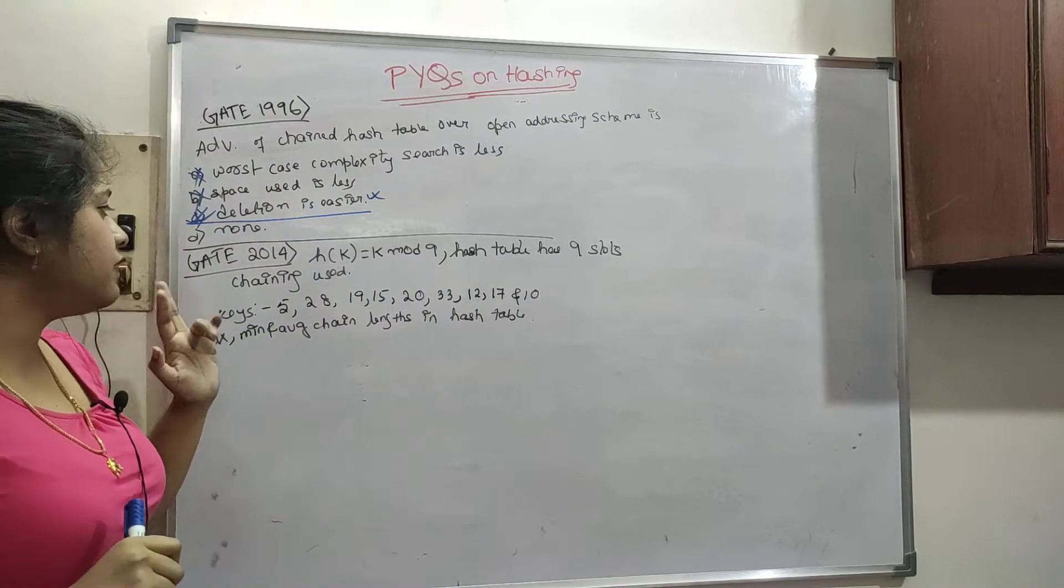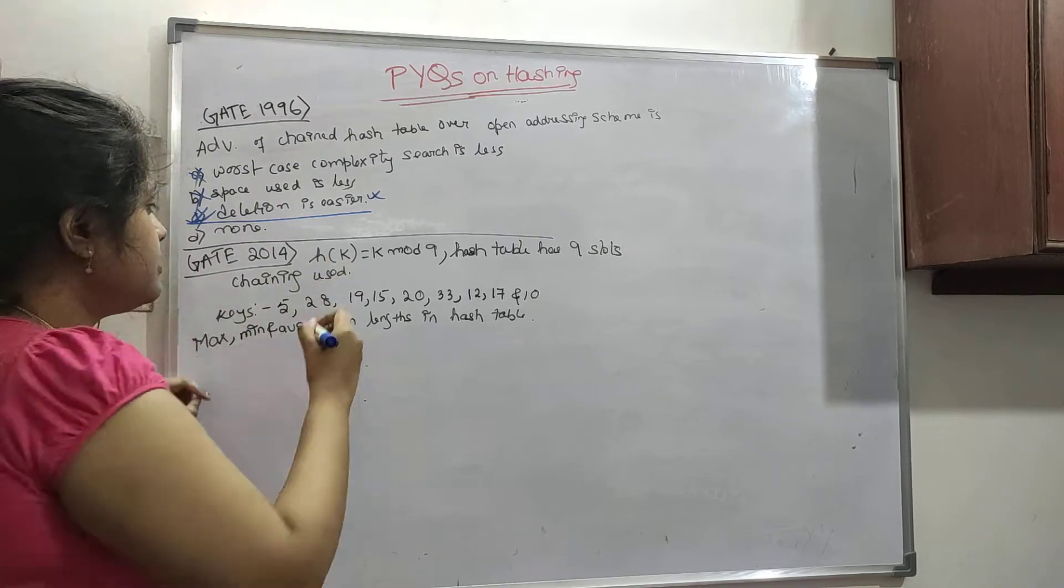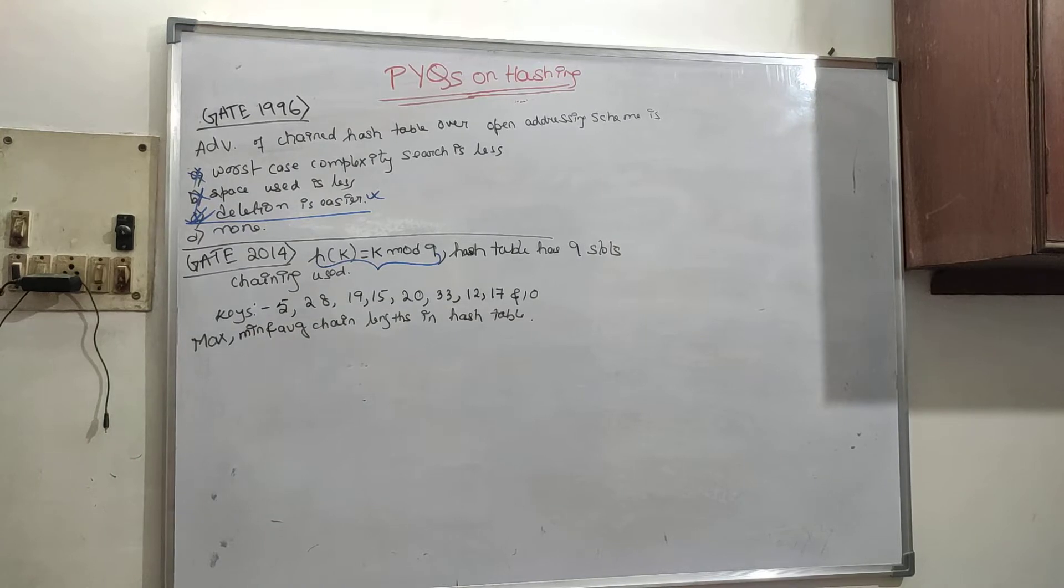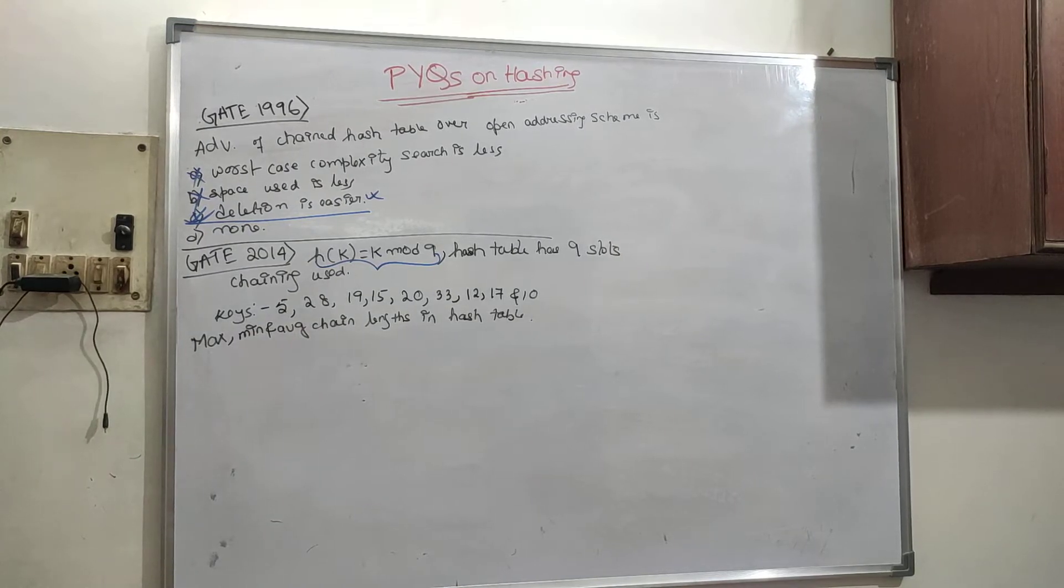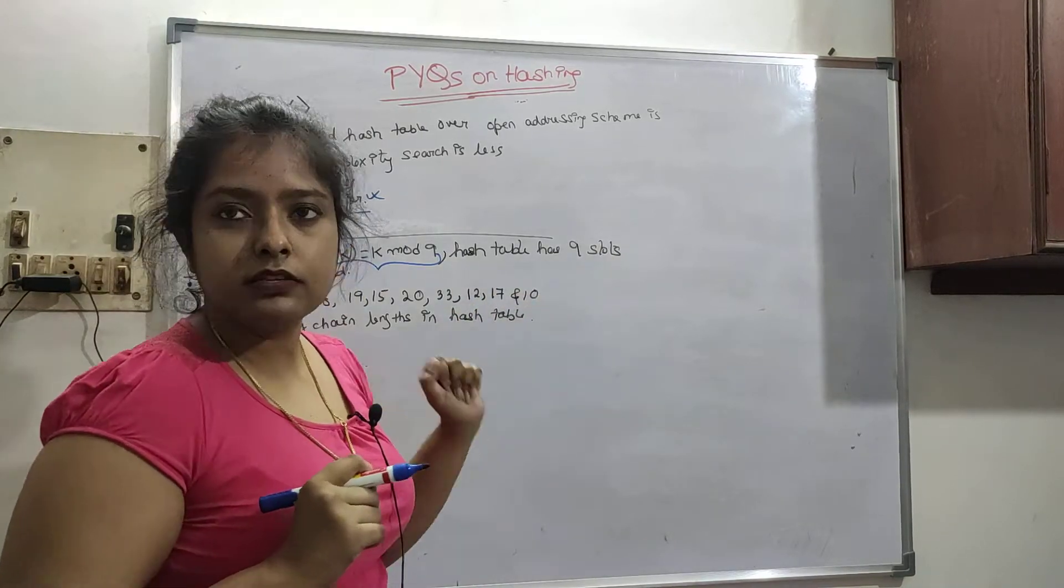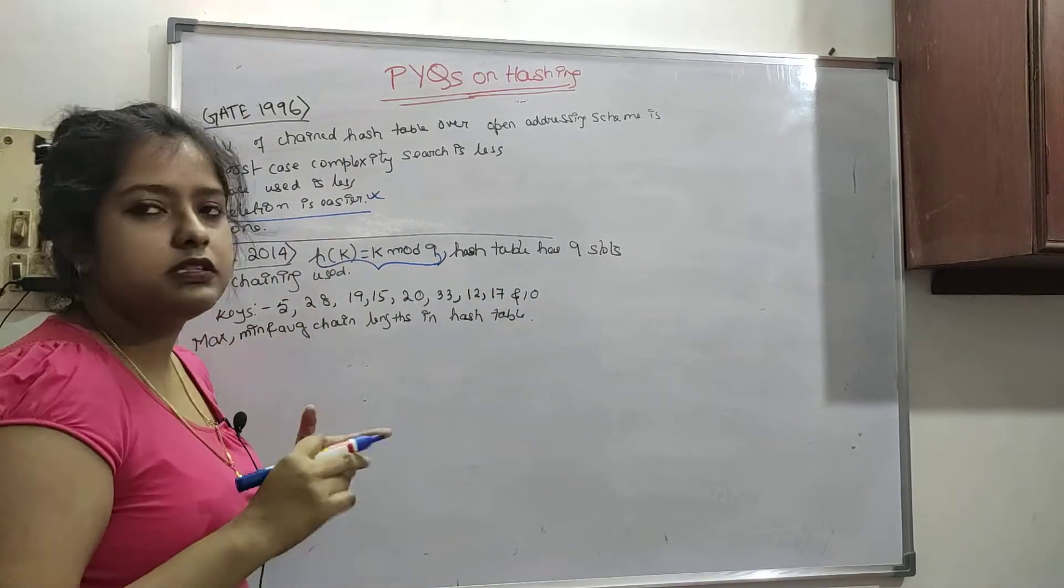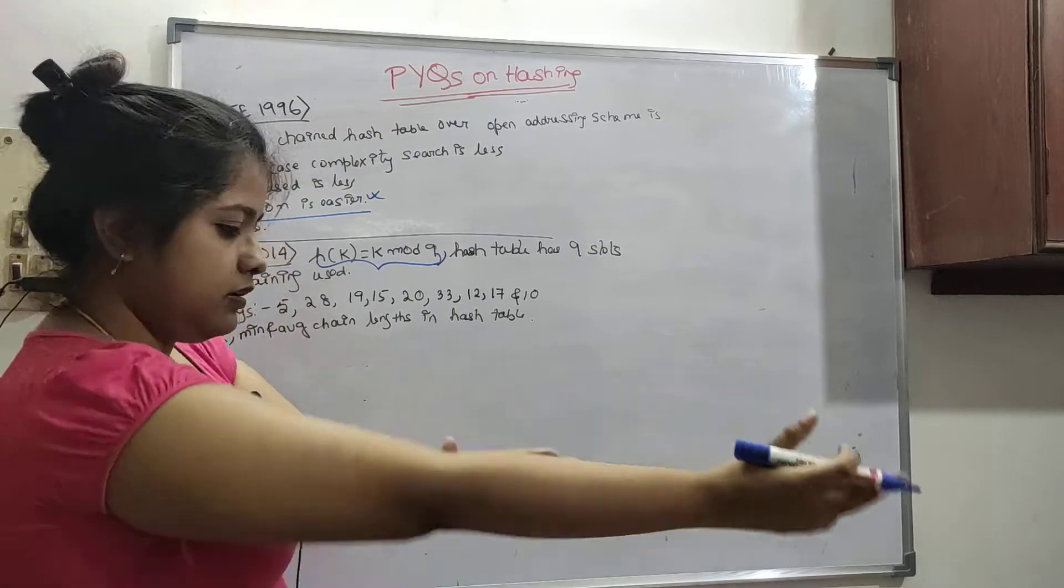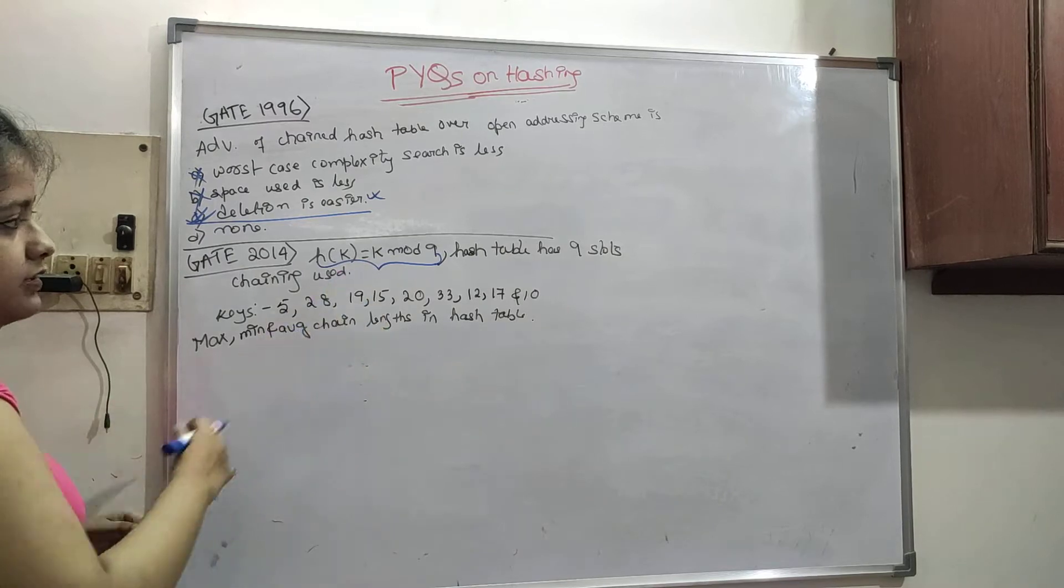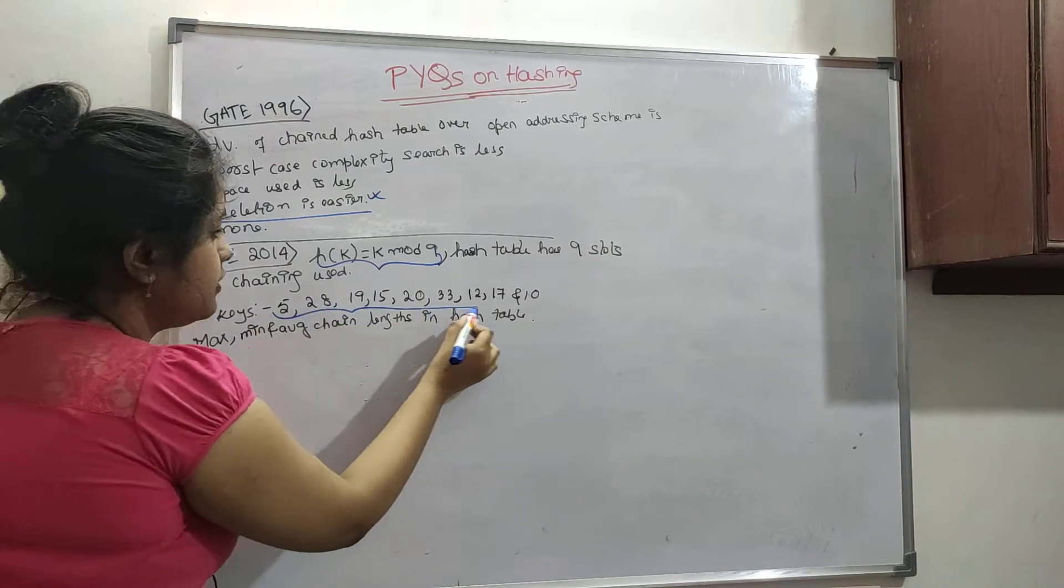Now let us come to our next question that is GATE 2014. This is asked, this is basically our hash function. Hash table has 9 slots it is given. It may not be given because mod 9 means you will have 0 to 8 slots. Chaining is used and the keys are given.